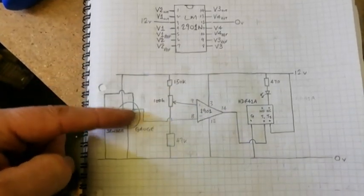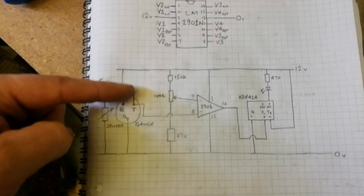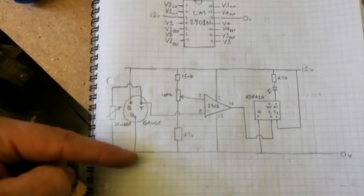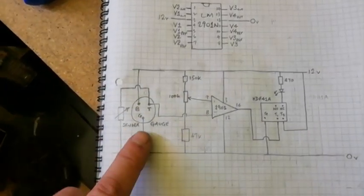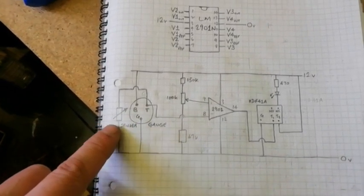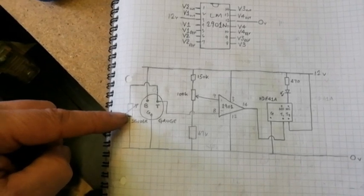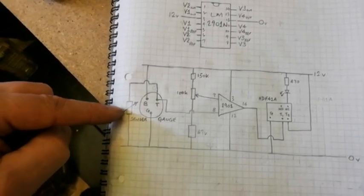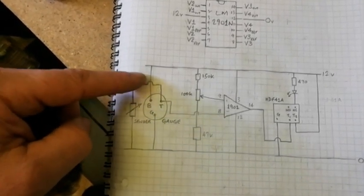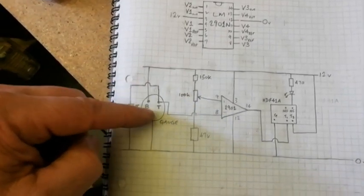What I've done now is I've replaced the potentiometer that was acting as a fuel gauge with the actual fuel gauge. I've now got a variable resistor, or half of a potentiometer, to act as a sender unit so the gauge will operate.